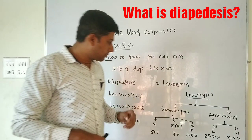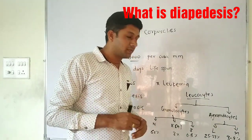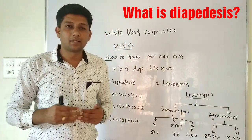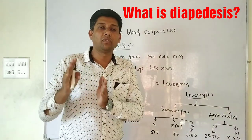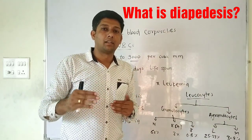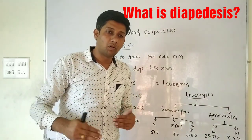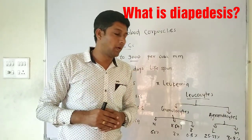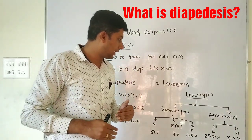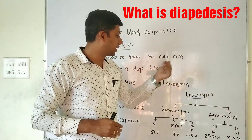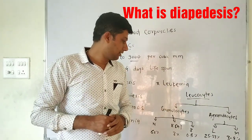Another term mentioned in the book is leukemia. This is a particular type of cancer where the WBC count increases to about 1 lakh or more than 1 lakh per cubic mm.